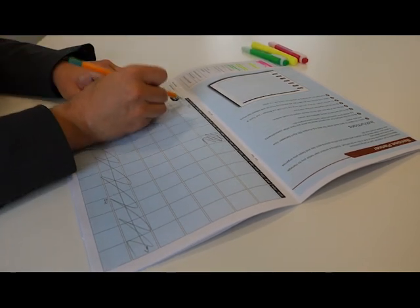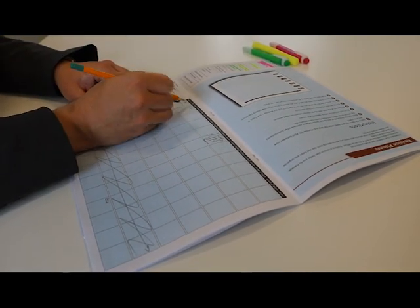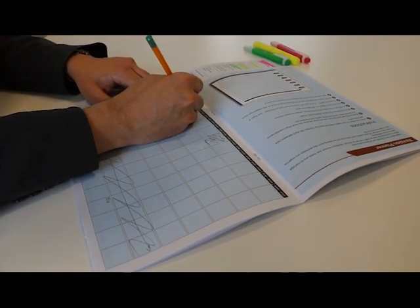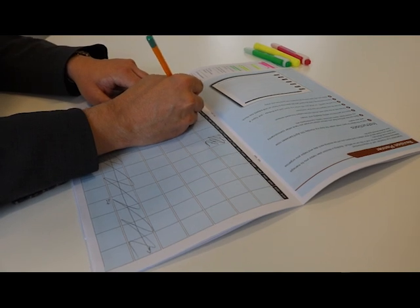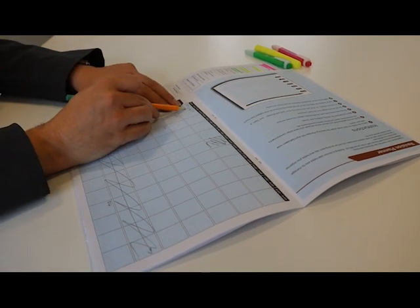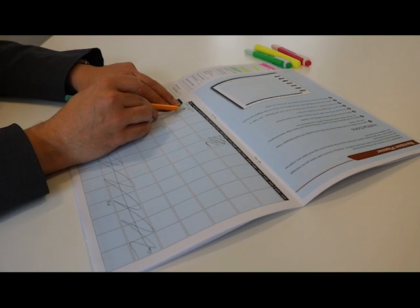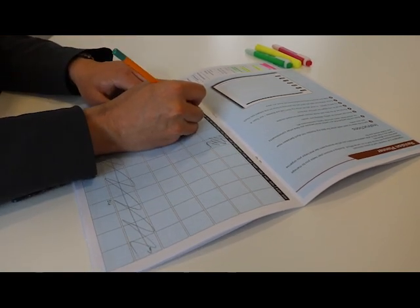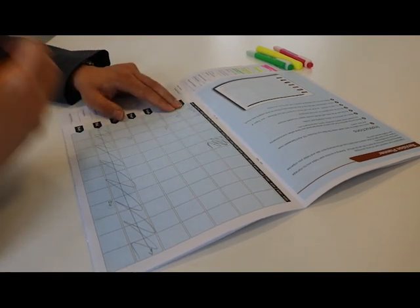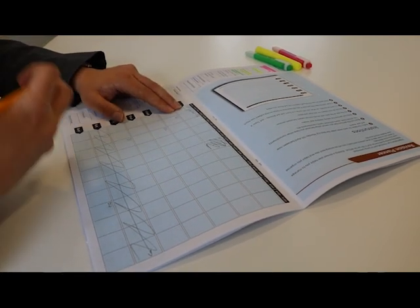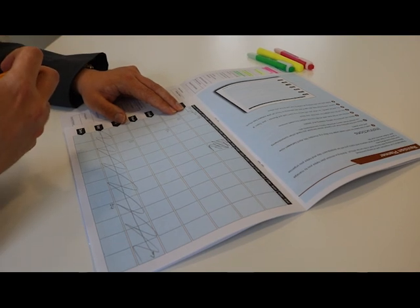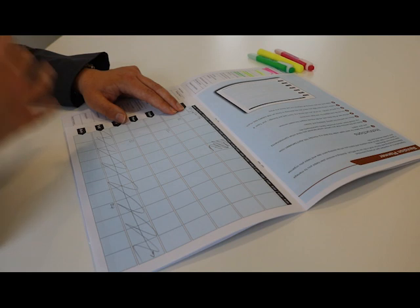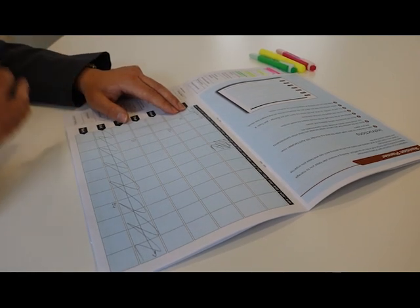The best students will also not just write down B1, but they'll also write down how they're going to revise it. So, for example, you might choose to write down the look, cover, write, check methodology there as a little bit of a reminder to yourself about how you're going to do it. You might use flashcards for B2. So you might just do a little code there, FC, for flashcards to remind you to make sure that when you're doing that session, you're going to be using flashcards. So try to marry up what you're doing with also how you're doing that revision.